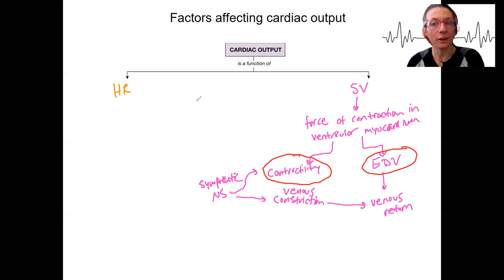Heart rate can also be regulated. So heart rate is dependent on what? You could do this, right? Depolarization of what? The pacemaker cells, those autorhythmic cells.